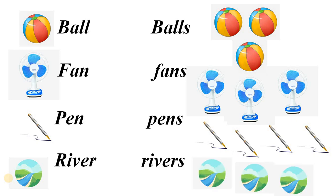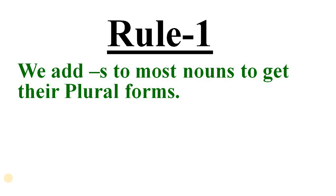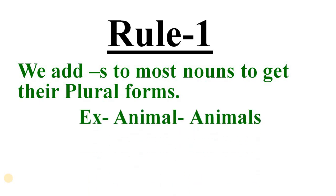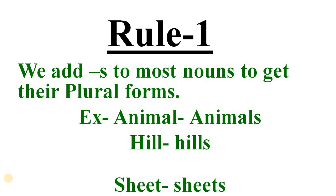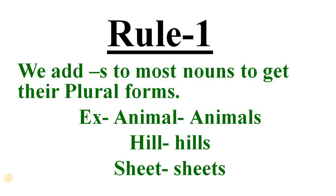In all these words, we just added 's' to form the plural. Let's check some rules on how we can change a singular into plural. Rule number one: we add 's' to most nouns to get their plural forms. For most nouns, to change into plural, we just add 's'. For example, we add 's' to animal to make it plural. Hill is singular and hills is plural. Sheet is singular, but when we add 's' it becomes sheets and it is plural.